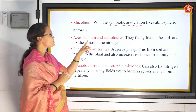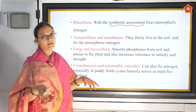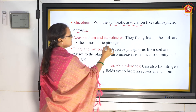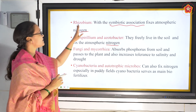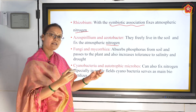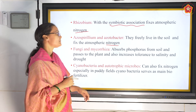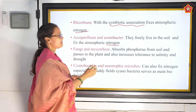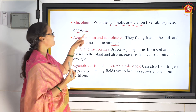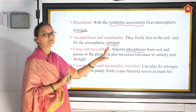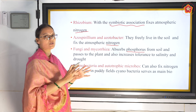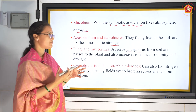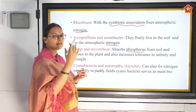The next biofertilizers are Azospirillum and Azotobacter. These live freely in the soil and also fix atmospheric nitrogen. Rhizobium lives in the roots; Azospirillum lives freely in the soil. Next, fungi and mycorrhiza absorb phosphorus from the soil and give it to the plants - this is the only biofertilizer that absorbs phosphorus. They also retain the moisture of the soil, thereby increasing tolerance to salinity and drought.